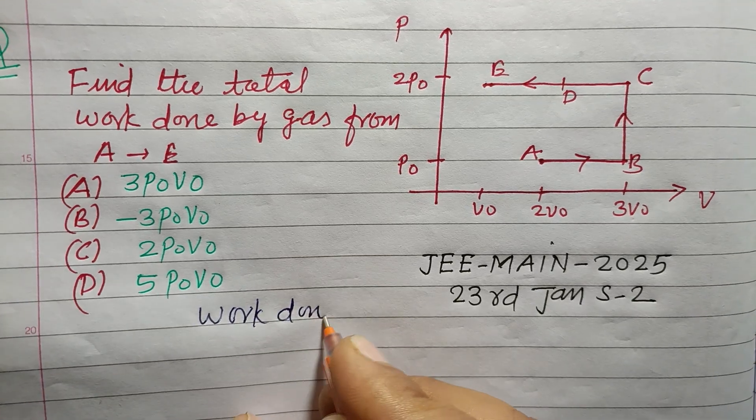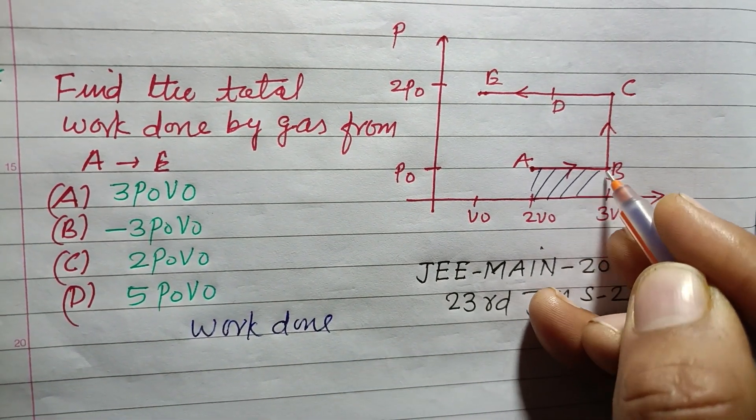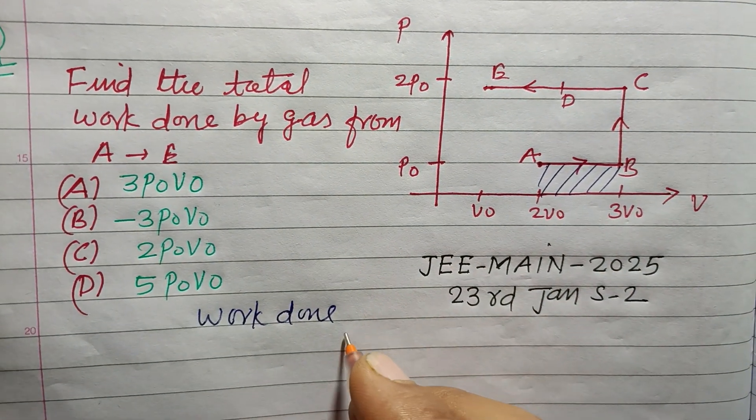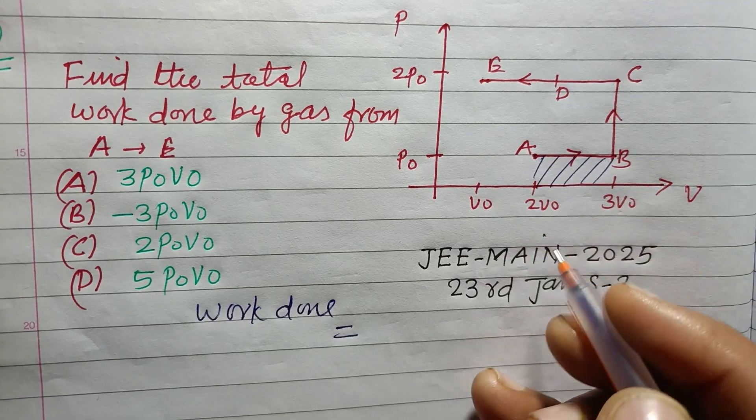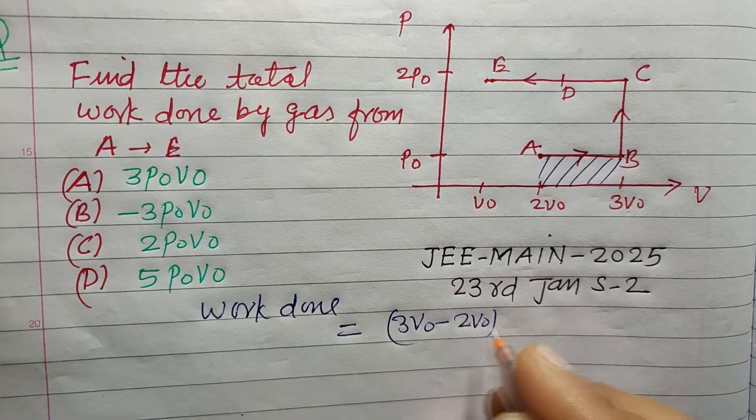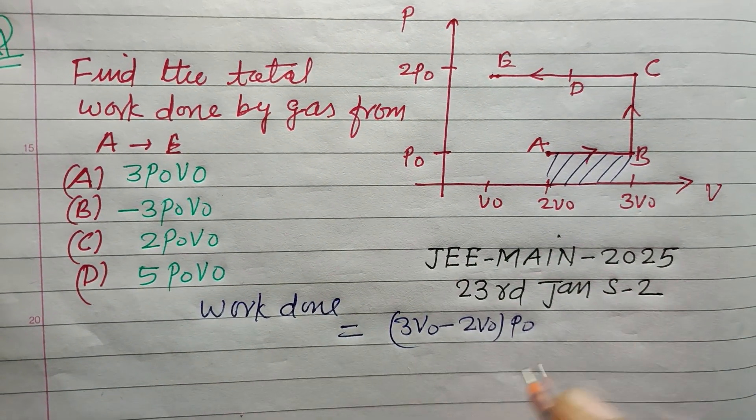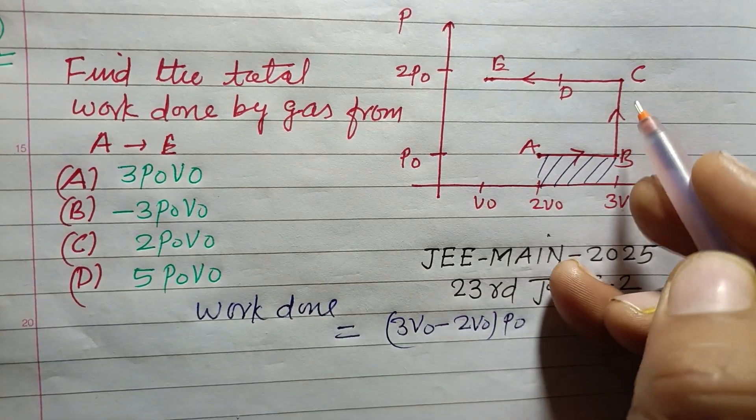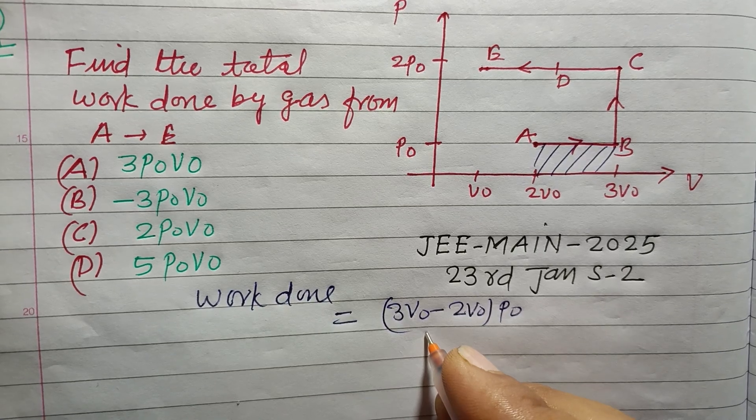Work done is the area under this curve. Here the gas is expanding from 3V₀ to 2V₀, with pressure P₀. Now for the process from A to B.